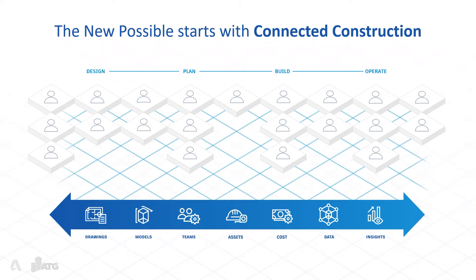What we're looking to accomplish is a more connected construction process. When all project information is housed, stored, and managed within a common data environment like the Autodesk Construction Cloud, all teams remain connected across every phase of the project. That connection enables management of drawings, design models, team permissions, assets, project costing, and all associated data — leading to higher-level insight, assertive decision-making, predictive insights, and better business outcomes.